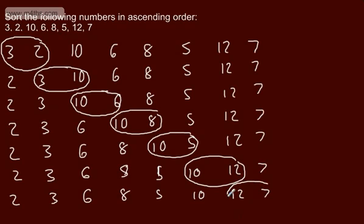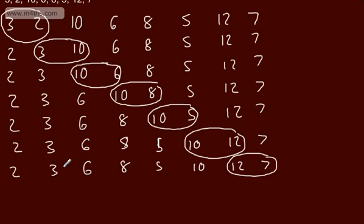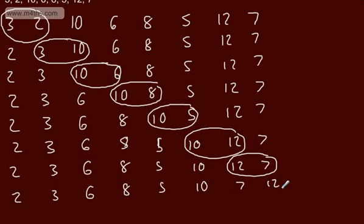Final comparison: 12 and 7. We're going to swap these over. So the list is now: 2, 3, 6, 8, 5, 10, 7, and 12. I'm now going to write here: end of first pass. This ensures that 12 is in the correct place.